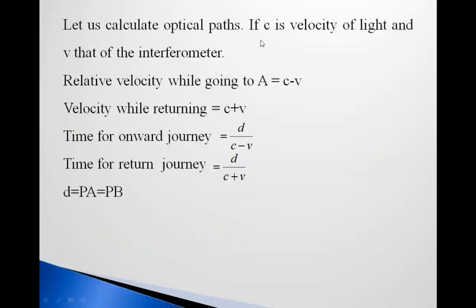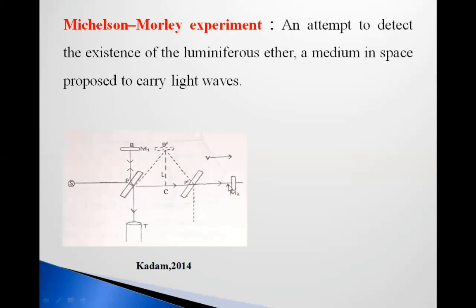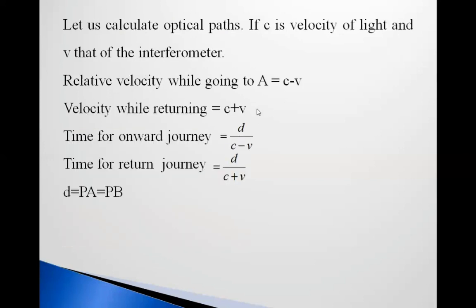Let us calculate the optical paths. Let C be the velocity of light and V that of the interferometer. The relative velocity when going from P to A is C minus V, and when returning it is C plus V. The time for the onward journey is D upon C minus V, and time for the return journey is D upon C plus V. Here D is the path length, and PA is equal to PB.